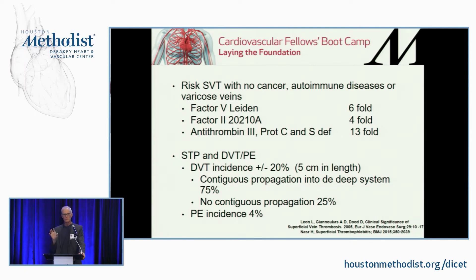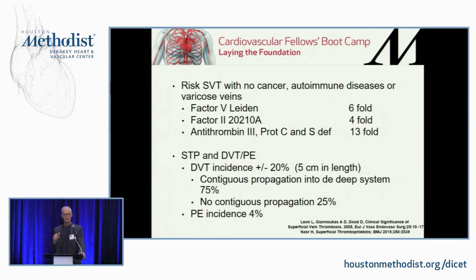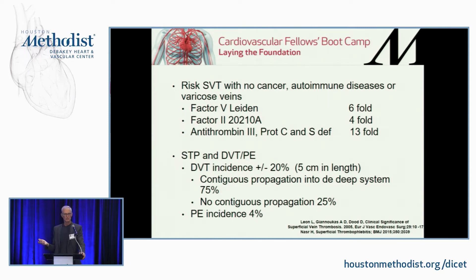Typically, in a person with superficial thrombophlebitis that's remote from the deep system — meaning it's out on the calf somewhere — treating those people symptomatically is pretty reasonable. But if they've got a superficial clot that's adjacent to or approaching the deep system, such as the small saphenous vein behind the knee getting to the popliteal, or the great saphenous vein in the thigh within a few centimeters, and if your feeling is that it's likely to propagate into the deep system, then it's reasonable to anticoagulate.